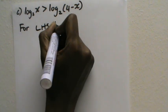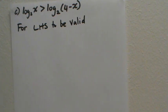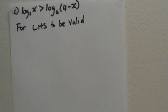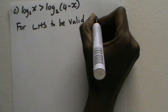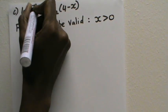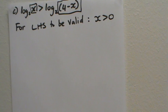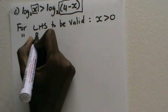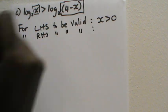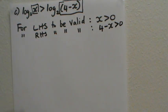For the left-hand side to be valid — it must be a real number — I need to check the argument. Here, x is called the argument, and the argument must be greater than zero. So I should have x greater than zero. The same thing is true on the right-hand side: the argument must be greater than zero. Taking the log of zero or a negative number is undefined, so four minus x must also be greater than zero.